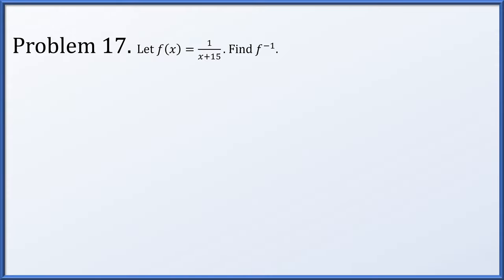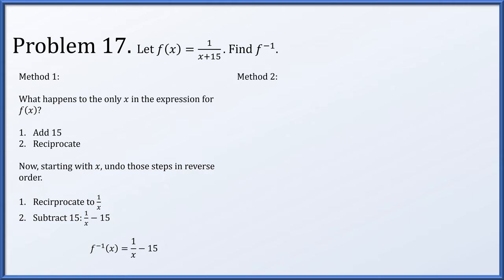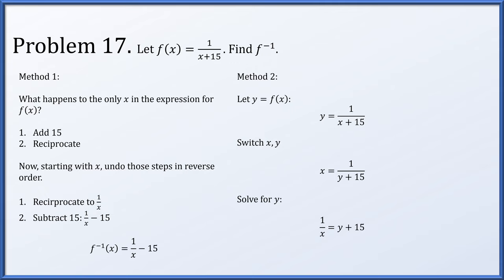Problem 17: f(x) = 1/(x+15). The first method: x is first added to 15, then reciprocated. Undoing in reverse: reciprocate first to get 1/x, then subtract 15, giving f⁻¹(x) = 1/x - 15. The second method: set y = 1/(x+15), swap to get x = 1/(y+15), reciprocate both sides to get 1/x = y + 15, subtract 15, and again get f⁻¹(x) = 1/x - 15.